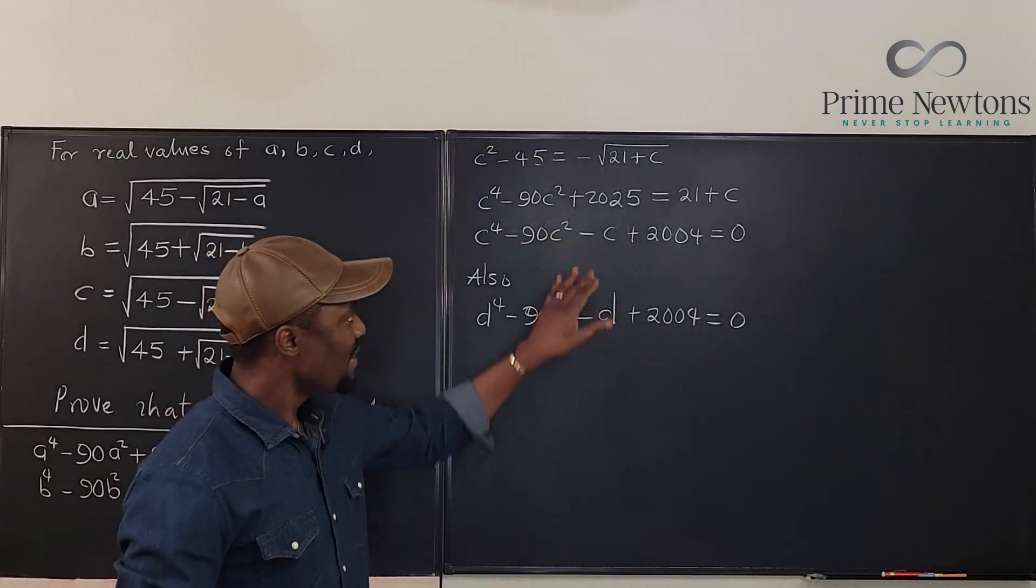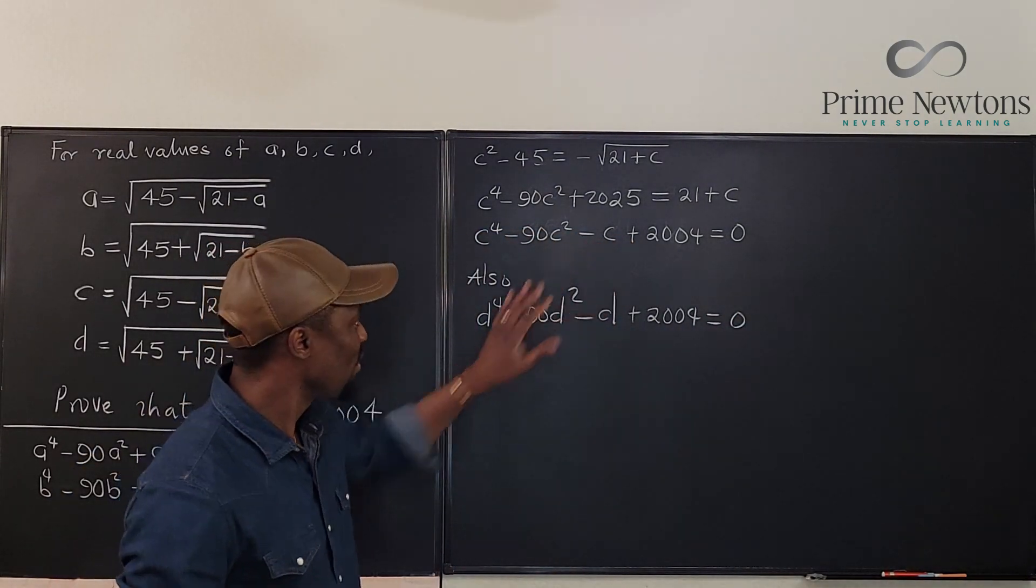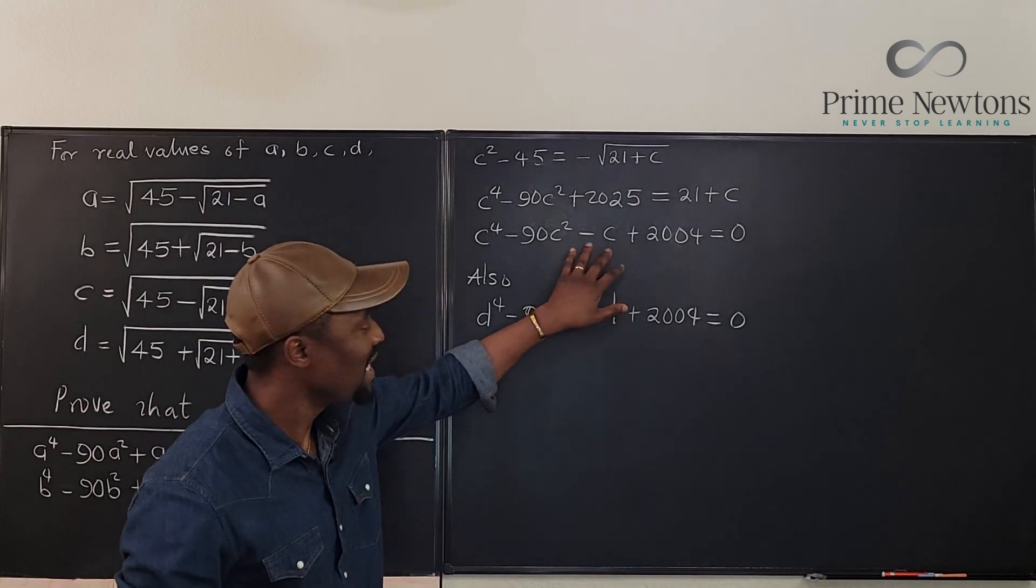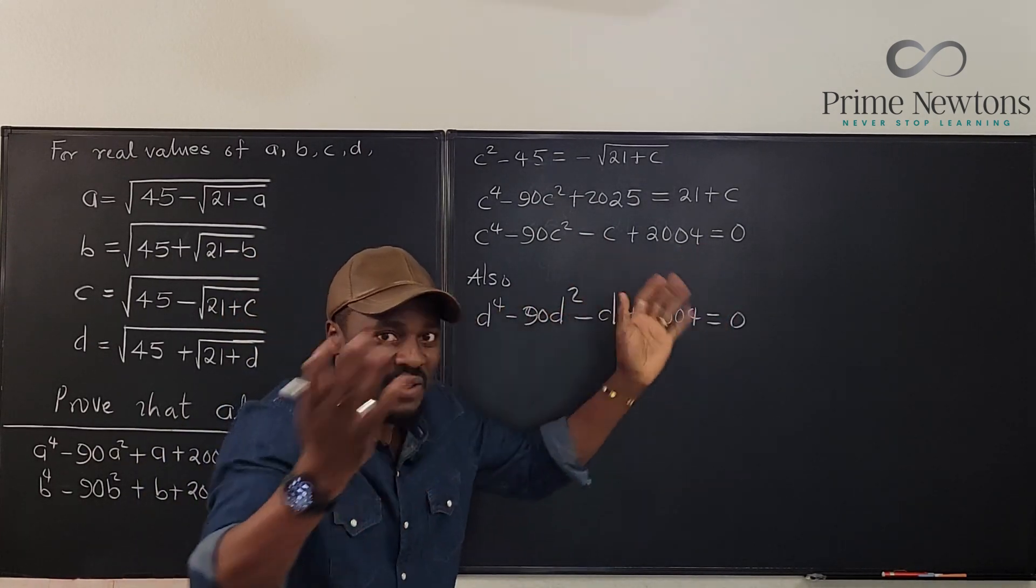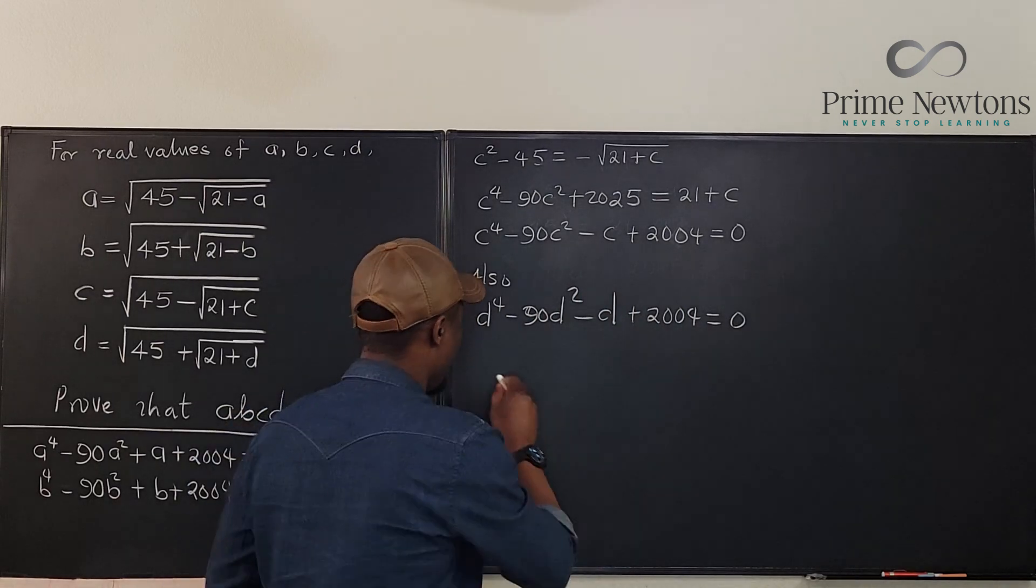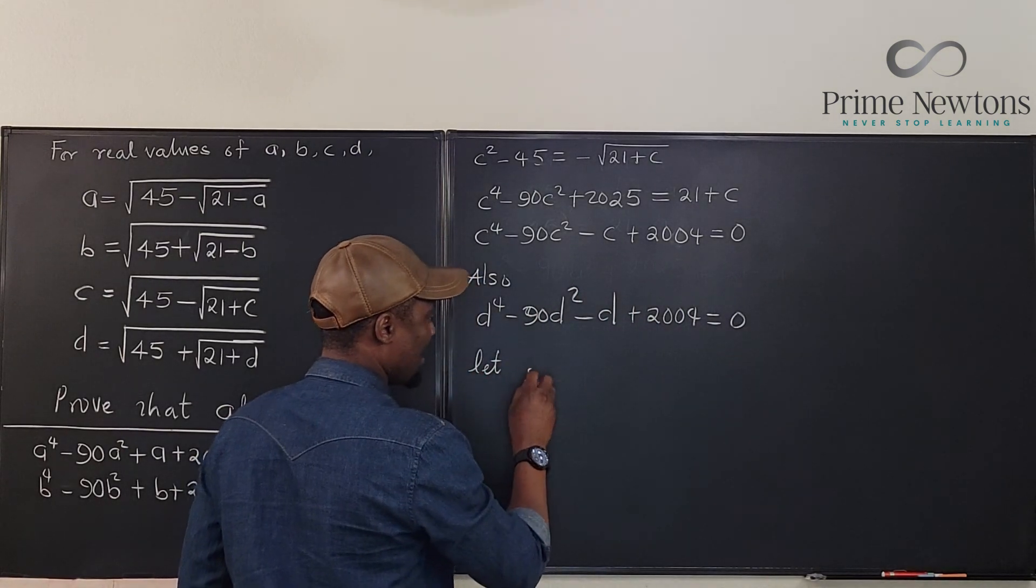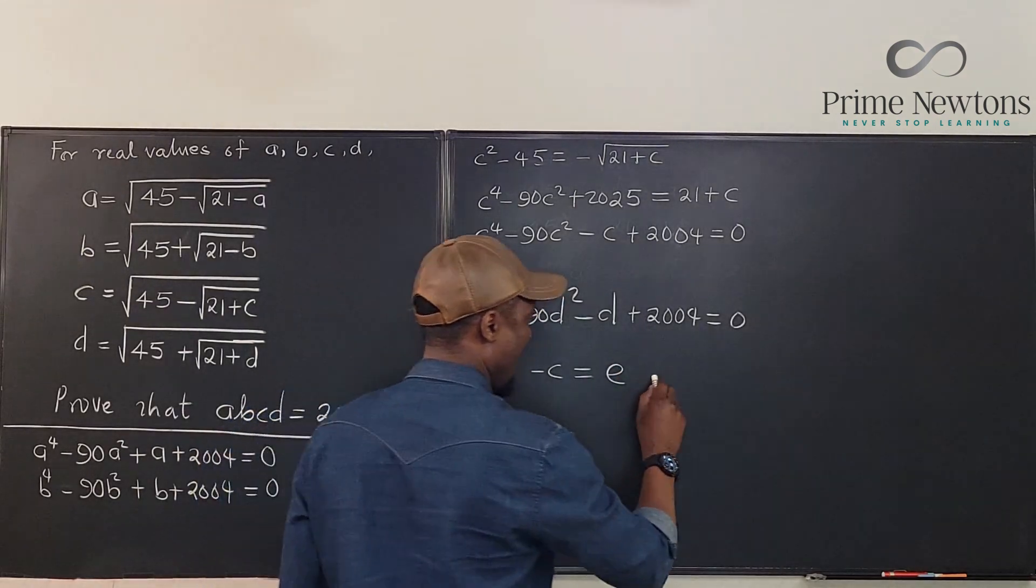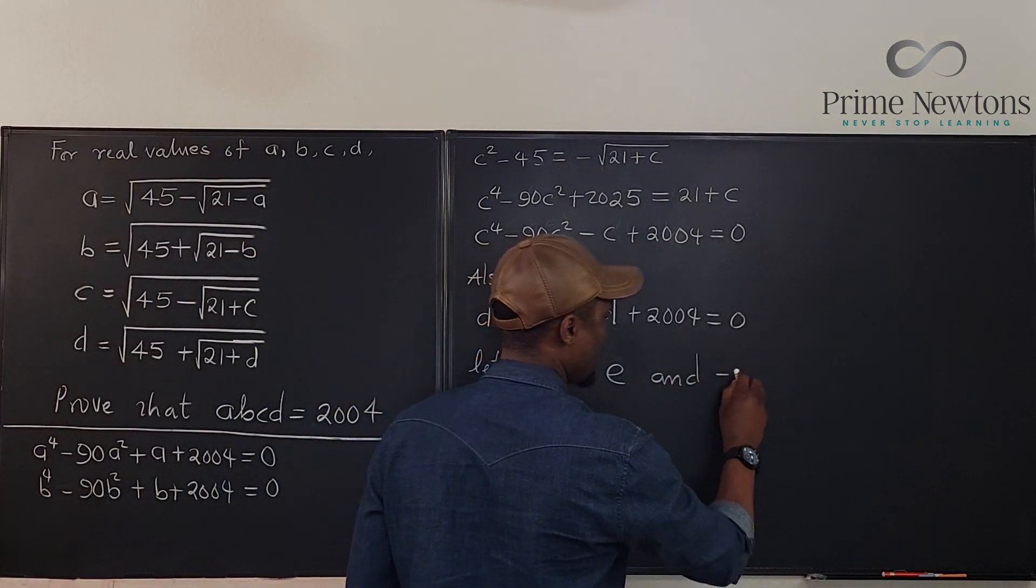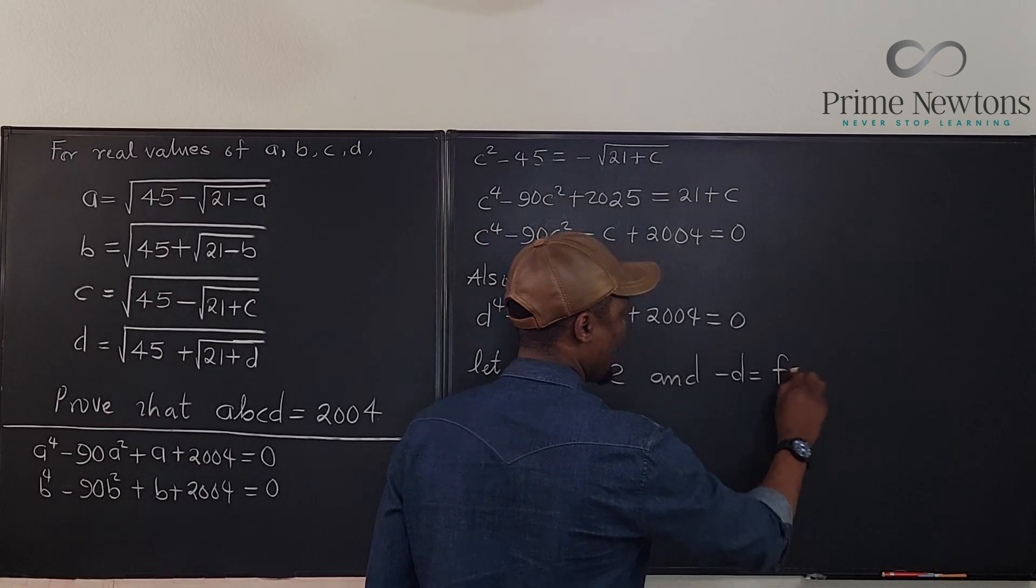So what's the remedy? What if we replace, we just want to make this look like these other ones. What if we replace negative C with positive, pick another thing. So let's say, let A, B, C, D, E, F. Let's do E. And let's negative D be equal to F.